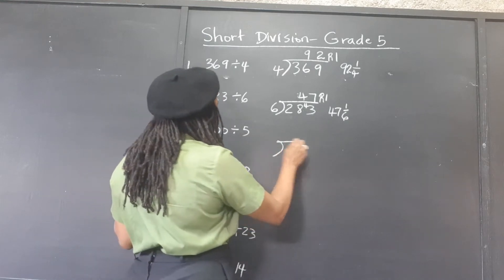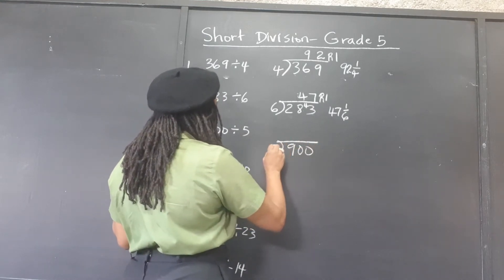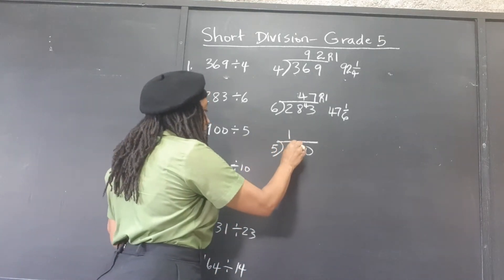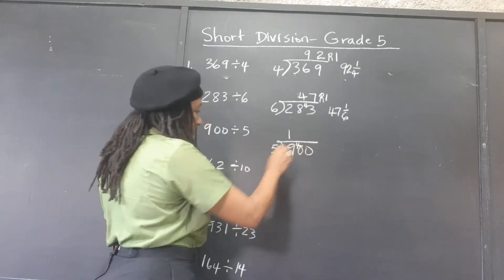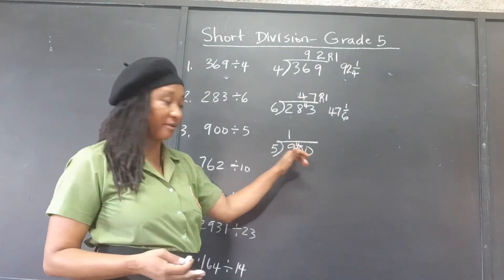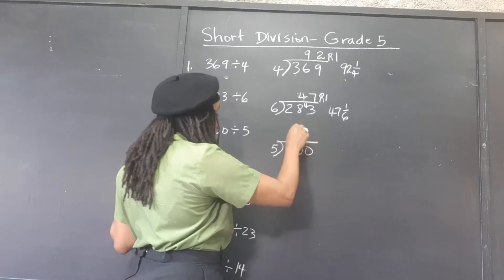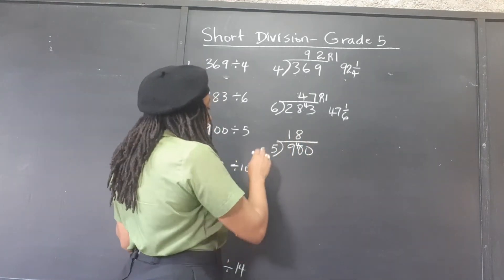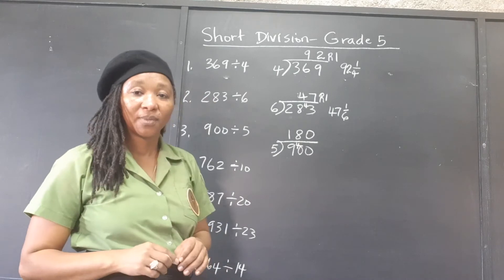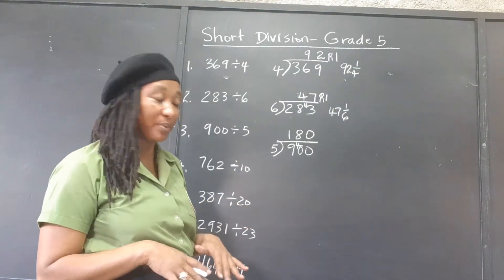900 divided by 5. 5 goes into 9 one time, remainder 4. One time remainder 4 — we put the 4 here. 5 goes into 40 eight times, no remainder. 5 goes into 0 zero times. So, 180 flat, no remainder.